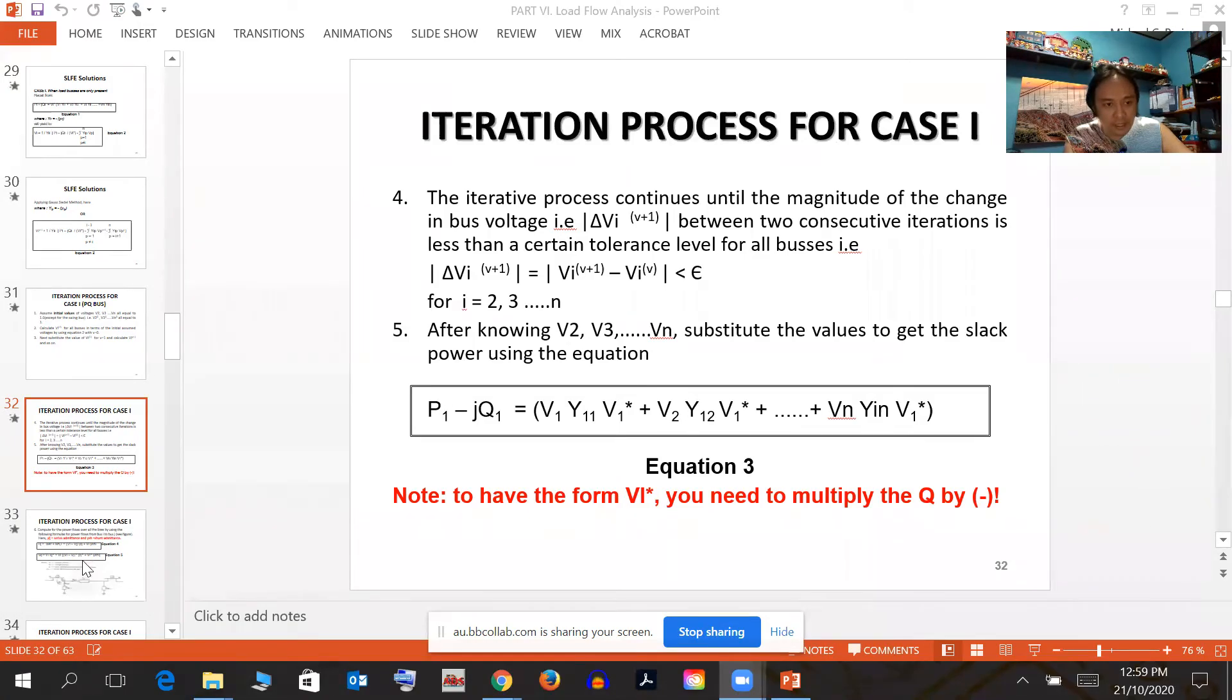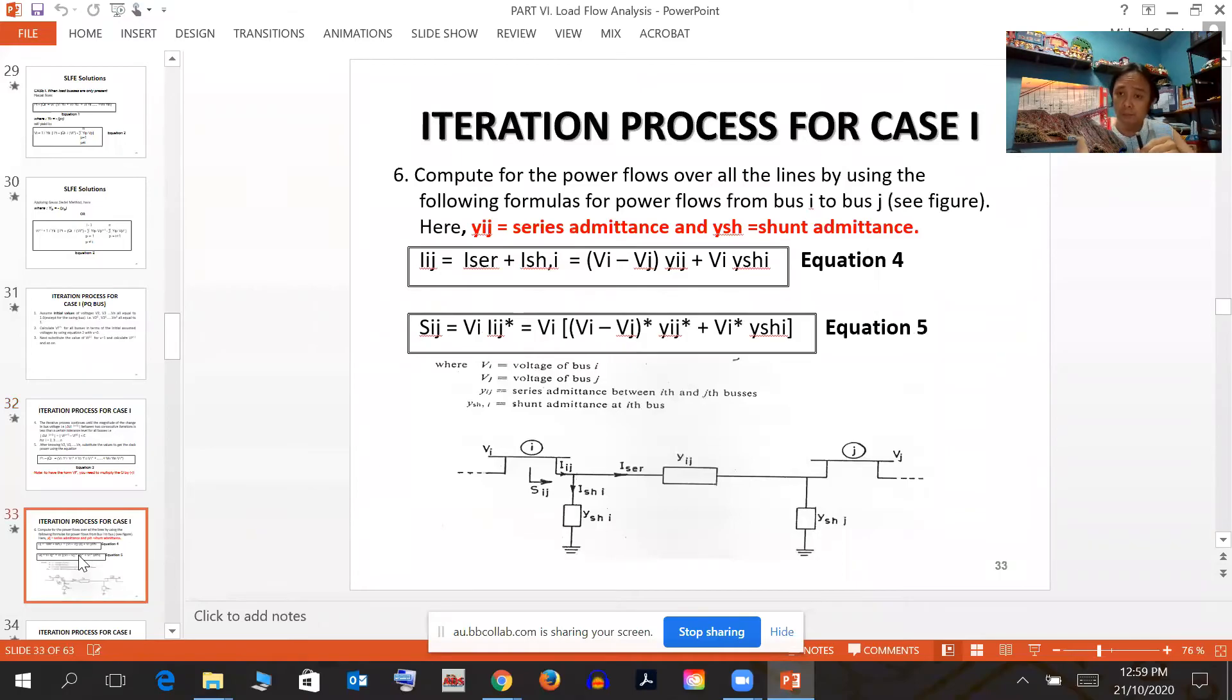After this, we can use iterative techniques until you solve the magnitude and change of bus voltages until it reaches the tolerance level. After knowing V1, V2, V3, we can use the equation to get the slack bus equation—this is the slack bus equation of power at the slack bus.